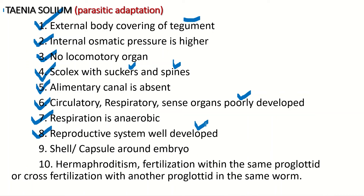They can produce a large number of eggs — about 40,000 eggs per proglottid. The reproductive system is well developed, and they also have a protective covering of shell and capsule around the embryo. The shell and capsule act as an envelope around the embryo, providing protection during unfavorable conditions.